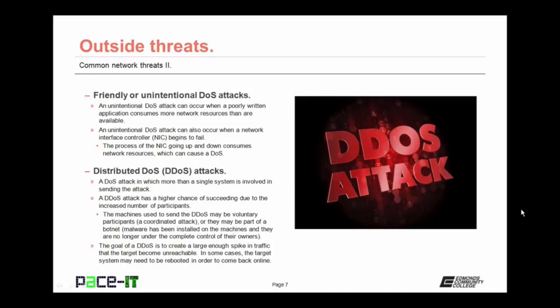More destructive than the standard denial of service attack is the distributed denial of service attack, or the DDOS attack. It's a denial of service attack in which more than a single system is involved in sending the attack. A DDOS attack has a higher chance of succeeding due to the increased number of participants. The machines used to send the attack may be voluntary participants — called a coordinated attack — or they may be part of a botnet, where malware has been installed on the machines. Many DDOS attacks involve botnets where the attacker has actually rented the botnet for the sole purpose of performing the DDOS. The goal is to create a large enough spike in traffic that the target becomes unreachable.